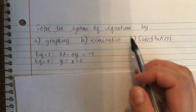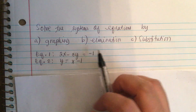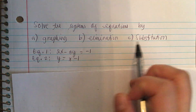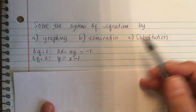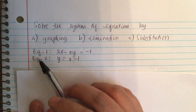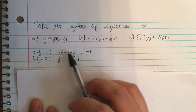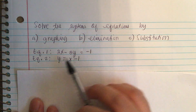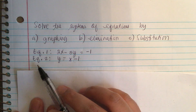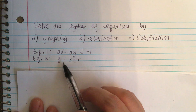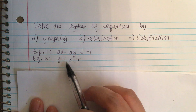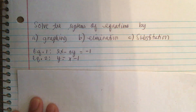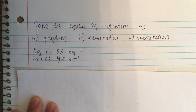Solve the systems of equations by graphing, elimination, and substitution. Equation number 1: 2x minus 3y equals negative 1. And equation number 2: y equals x minus 1.